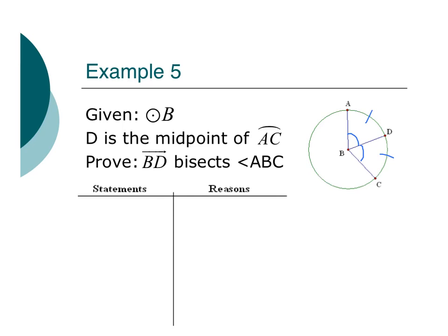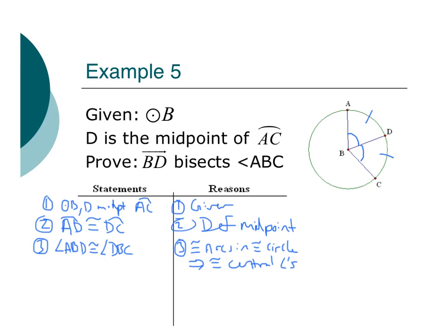So I've got arc AD congruent to arc DC by the definition of midpoint. Now I can move on to the central angles. So we know those two angles are congruent because if we have congruent arcs and congruent circles then are congruent central angles. So remember, they have to be central angles for those angles to be congruent. It's very, very important.